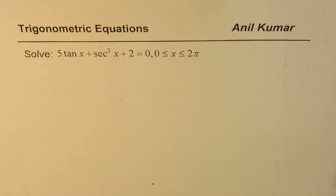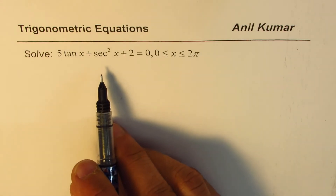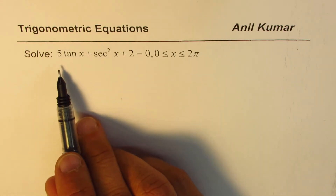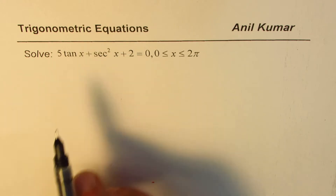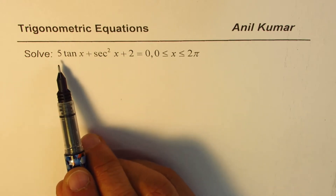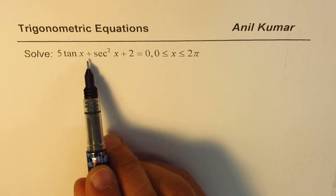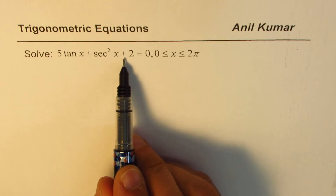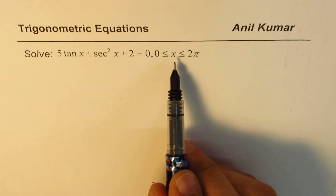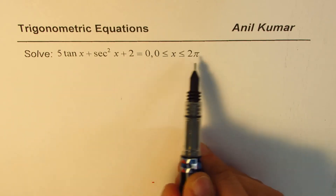I'm Anil Kumar, and in this series on trigonometric equations we have taken a few examples based on quadratic-type functions with two different trigonometric ratios. Here we need to solve the trigonometric equation: 5tan(x) + sec²(x) + 2 = 0, with the domain from 0 to 2π, both included.